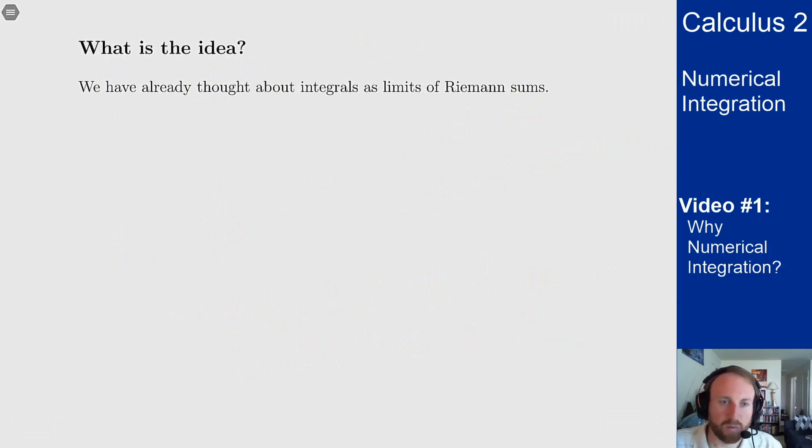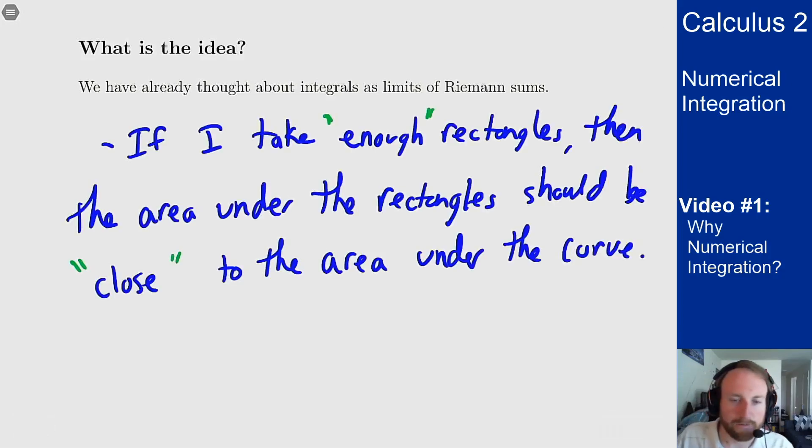So what's the idea of numerical integration? Well the idea is sort of how we got to integrals in the first place. We got to integrals by thinking about rectangles, adding up little rectangles and taking a limit as the number of rectangles went to infinity. The idea here is if I take a large enough number of rectangles, then the area from the rectangles should be close to the area under the actual curve. And I've put enough and close in quotes here because we will see later how to quantify what we mean by enough rectangles and how close that gets us to the actual area.